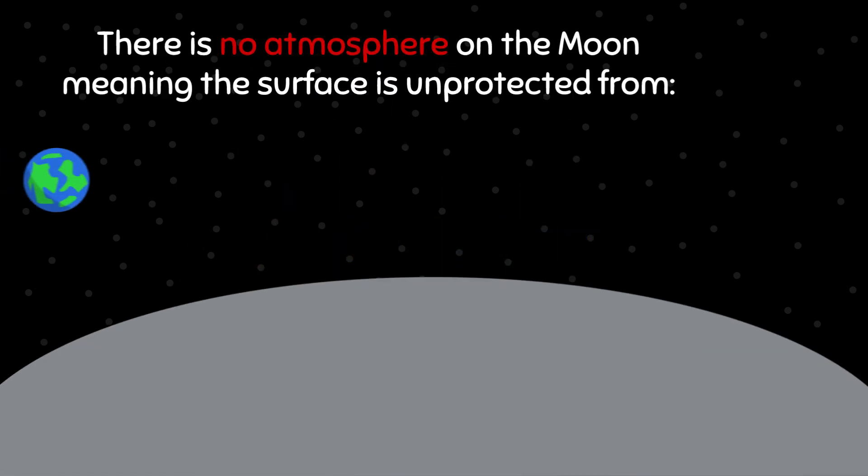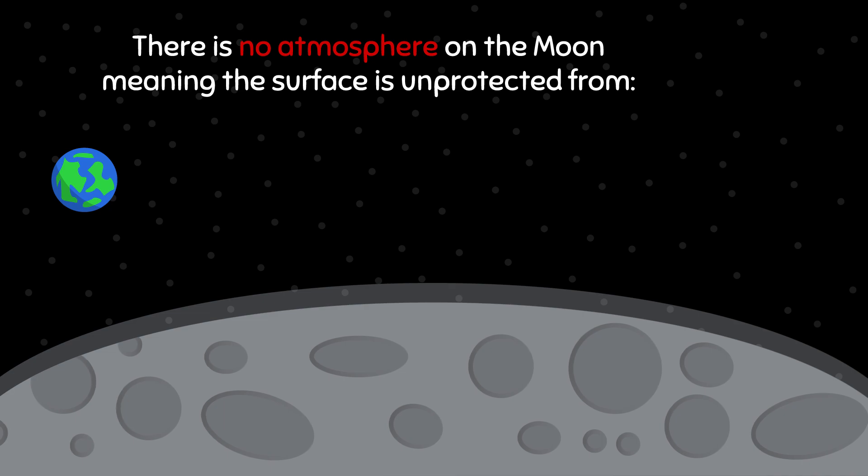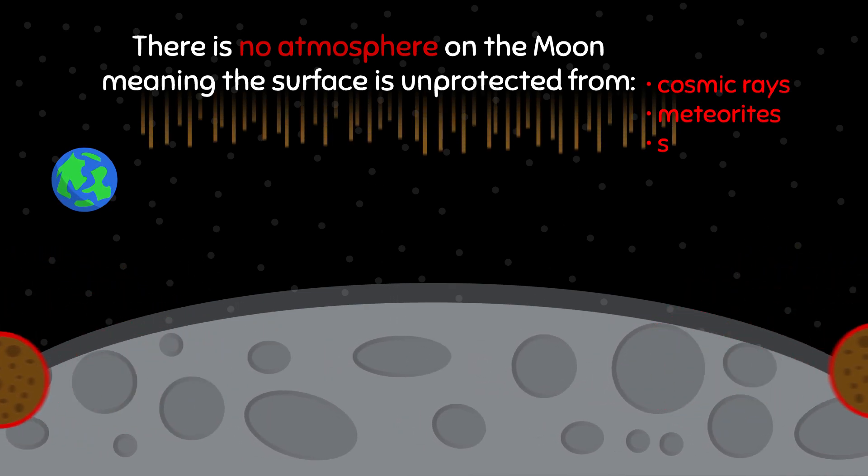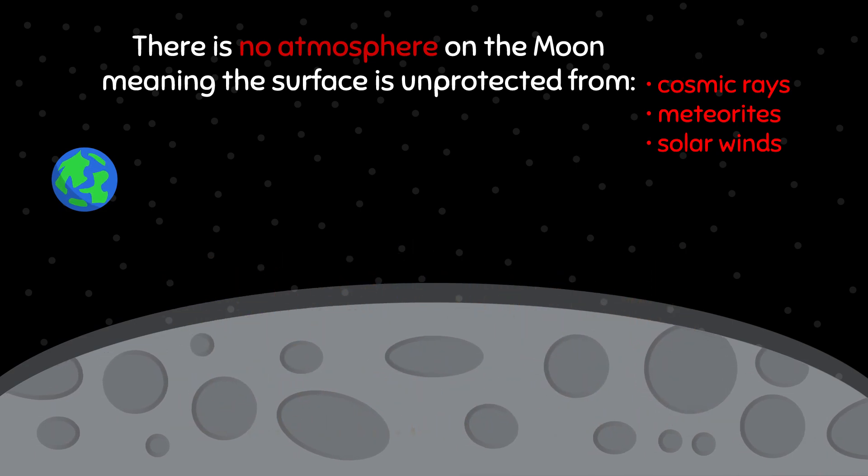No atmosphere. There is no atmosphere on the Moon, meaning the surface is unprotected from cosmic rays, meteorites, and solar winds. The lack of atmosphere also means no sound can be heard on the Moon and the sky is always black.